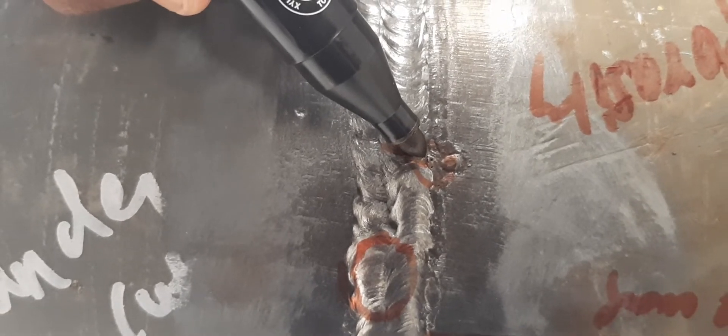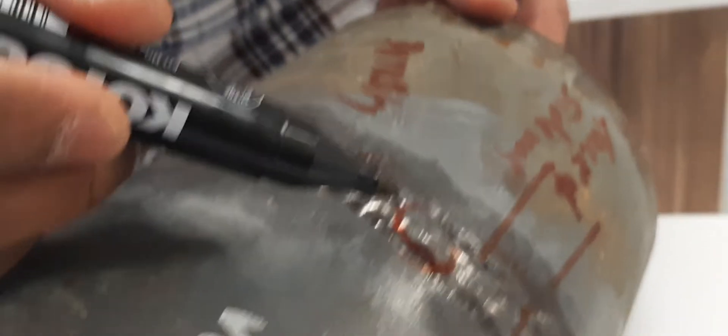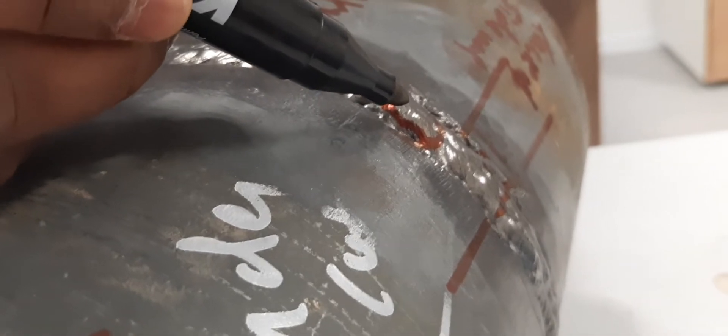Porosity causes: heavy wind, not properly baked electrode. And second one is reinforcement high.